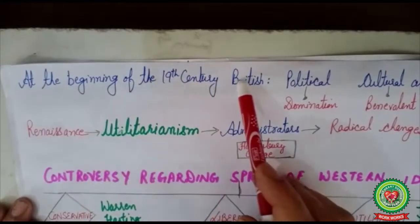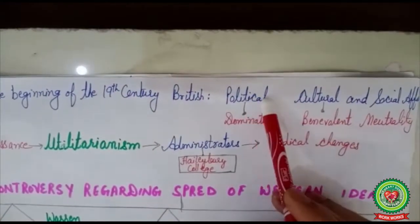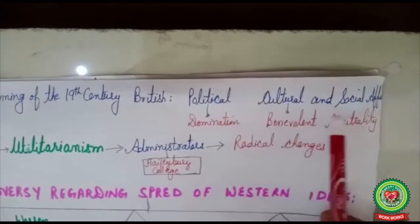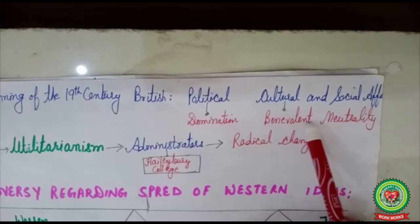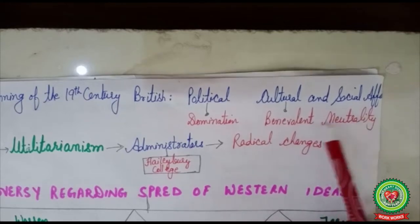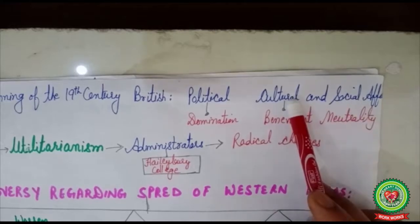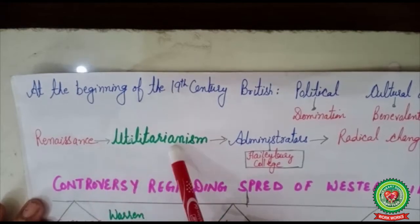At the beginning of the 19th century, the British followed two types of policies. In the political sphere it dominated India, but in cultural and social affairs it adopted a policy called benevolent neutrality — meaning not to interfere in the social and cultural life of Indians. As the Renaissance came in England, they developed a policy called utilitarianism.